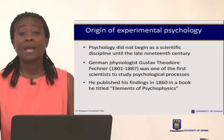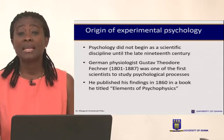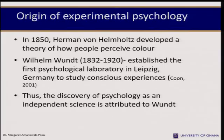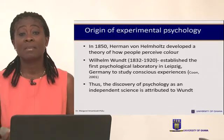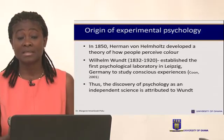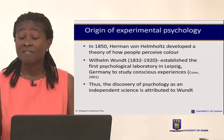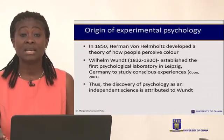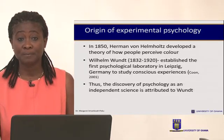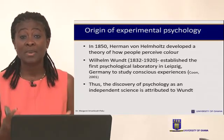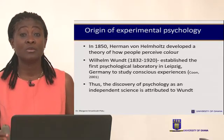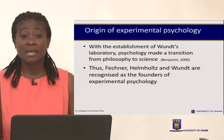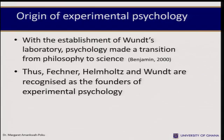One of the first psychologists to study psychological processes published his findings in a book titled Elements of Psychophysics. Then we have Helmholtz, who also developed a theory on how people perceive color. With these kinds of researches, psychology became a science and the field of experimental psychology was enhanced. Wundt was one of the first scientists to establish a psychological laboratory, which he did in Leipzig, Germany — the discovery of psychology as an independent science is attributed to Wundt. With the establishment of Wundt's laboratory, psychology made the transition from being a philosophy to being a science.